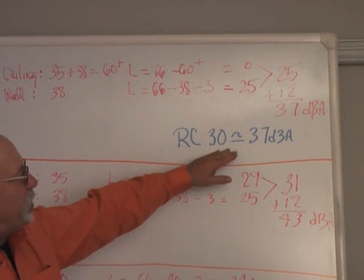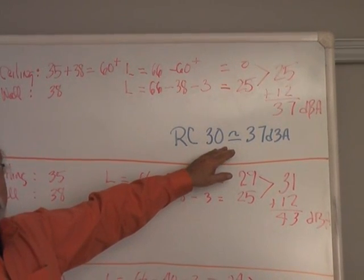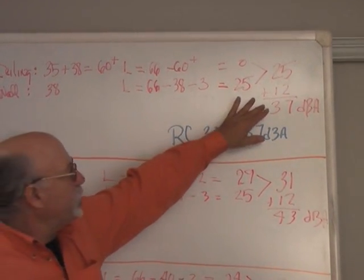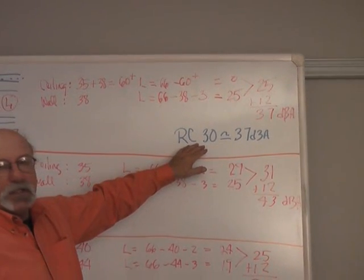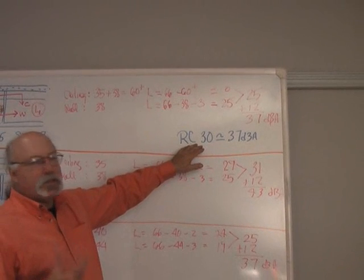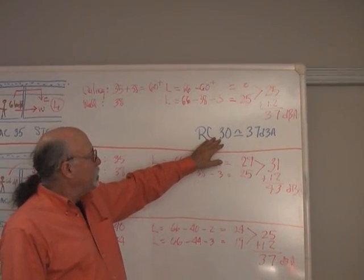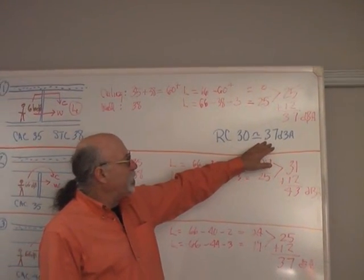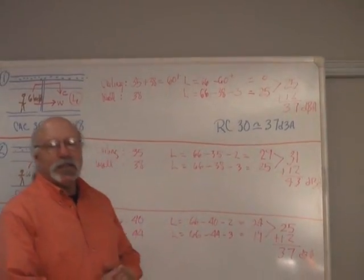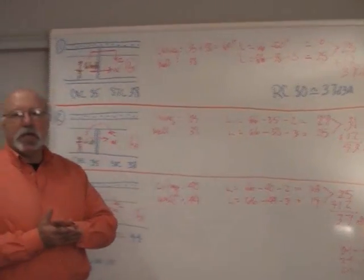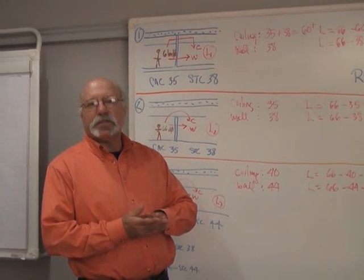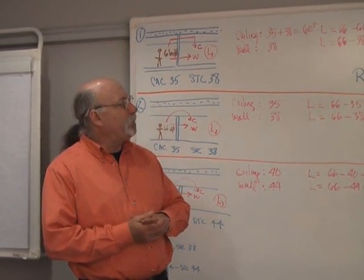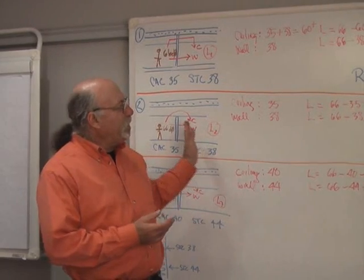And we always have to compare it for speech privacy relative to the background noise in the space. So if the intruding signal is 37 and we use the ASHRAE design guidelines for the HVAC noise, meaning the air conditioning system noise, it's usually an RC 30 which would be 37 dB. And that tells us that indeed, since the signal that's intruding matches with the background noise in the space, that in fact the noise is covering the signal and you do have confidential privacy.